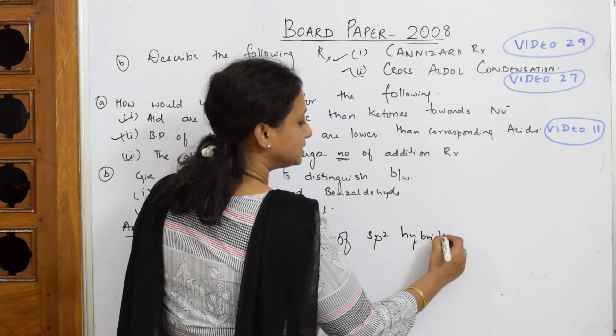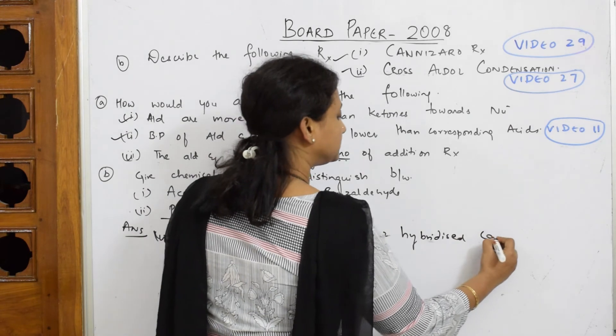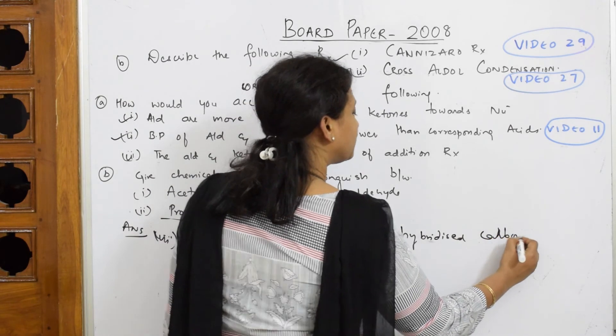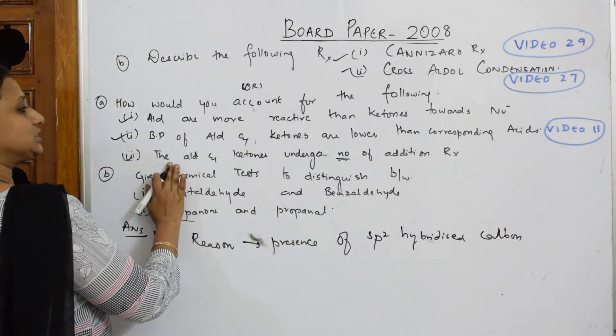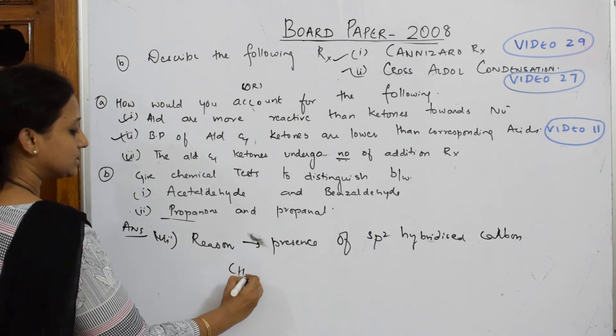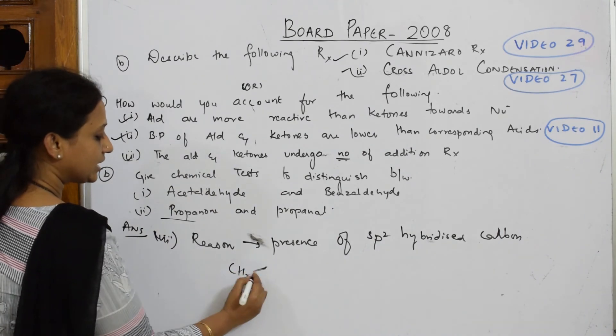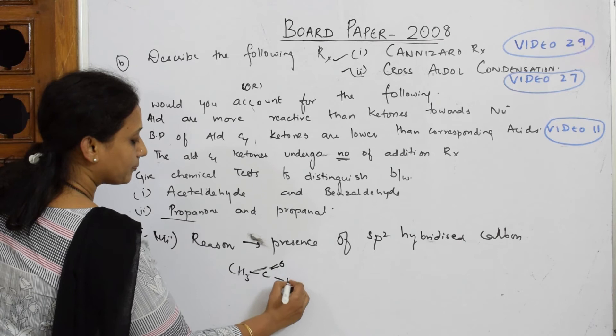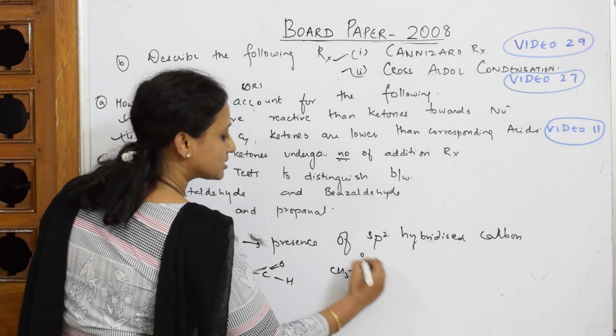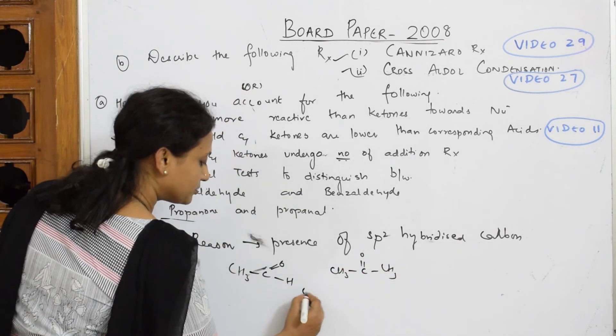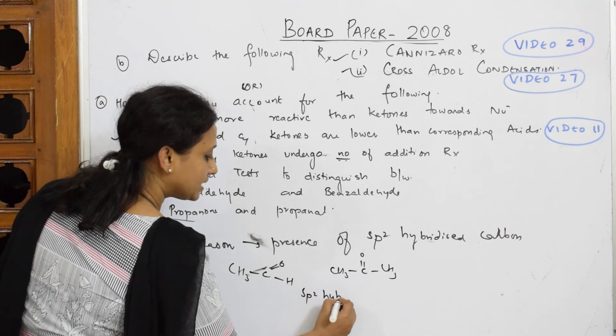Let's write the reason: presence of sp2 hybridized carbon. That's the only reason - simple. What do you do? You pick up your given both, aldehydes and ketones. Write that aldehyde like this and your ketone also write the structure and write sp2 hybridized carbon.